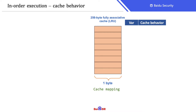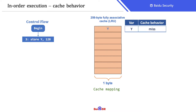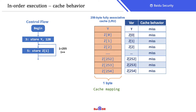Each cache line has one byte, and there are 256 cache lines in total. So if we run the program, the first store Y will put Y into cache, and the loop will also map the whole array into cache. The cache was initially empty, so all these memory operations cause cache misses. Next, we read variable X. Since the whole cache has been occupied, X will evict Y because Y is in the least recently used cache line. It is also a cache miss.